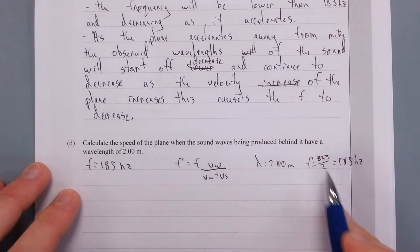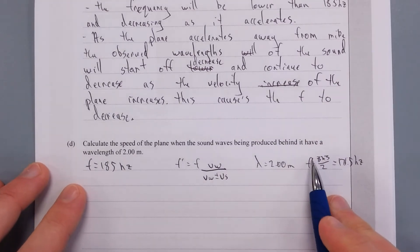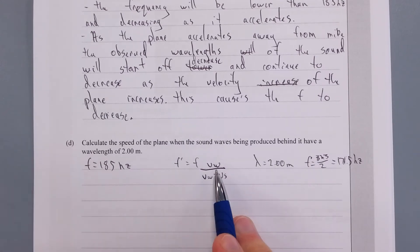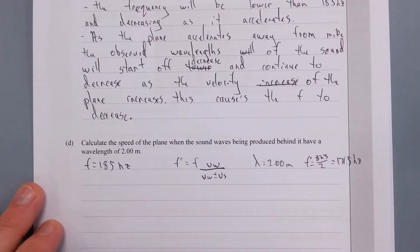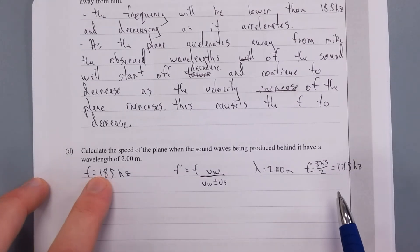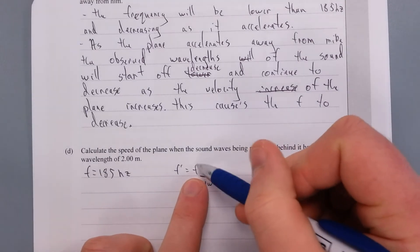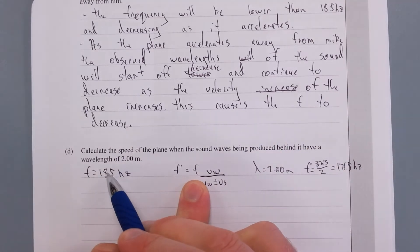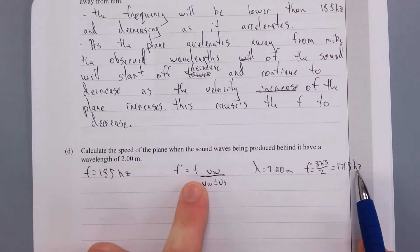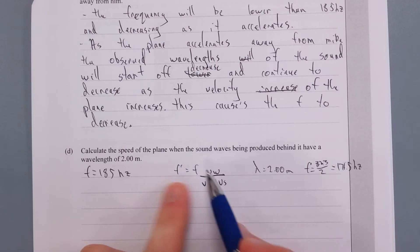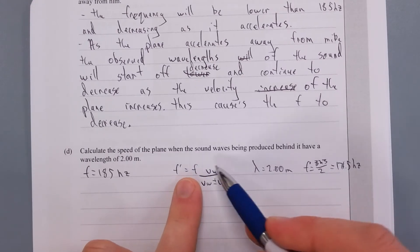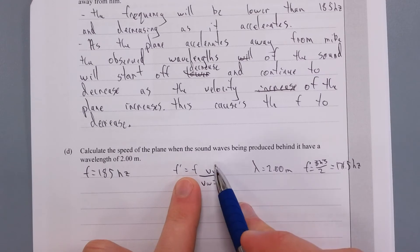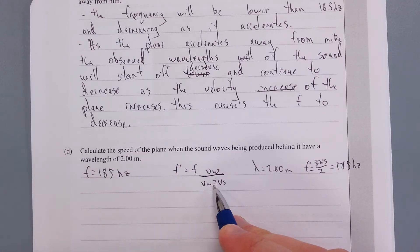We have the wavelength, so lambda is equal to 2 meters. If lambda is equal to 2 meters, that implies the frequency is equal to V over lambda, which is 343 over 2, which is going to give us 171.5 Hertz. This is our observed frequency. So this is the F dash and we have the F, and we're trying to find out the speed of the plane. So the tricky part is knowing whether to use the plus or the minus.